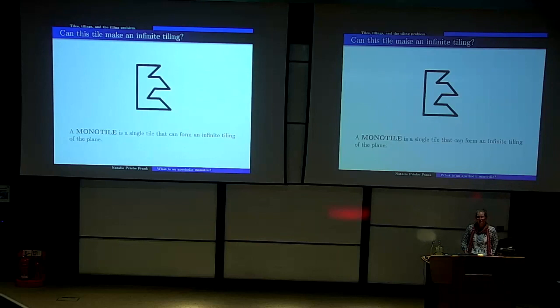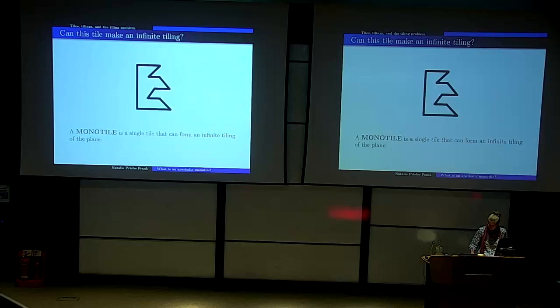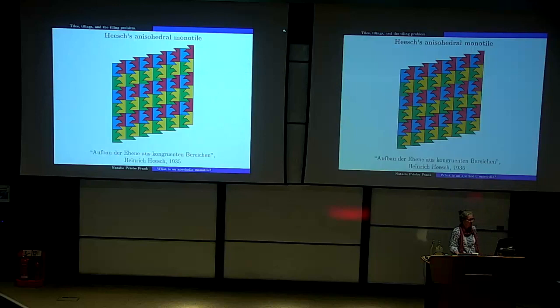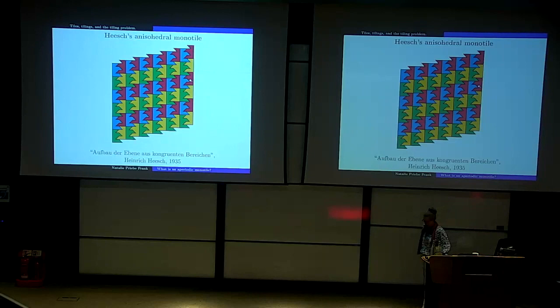A monotile is a single tile that can form an infinite tiling of the plane. This strangely shaped tile — from Heesch in the thirties, partly in response to a Hilbert problem — is a monotile: it can tile the plane. It's going to make a periodic tiling. If I take any blue copy, I can take it to any blue or green copy and the whole thing will be as if it had never been moved.